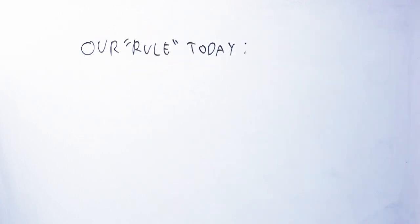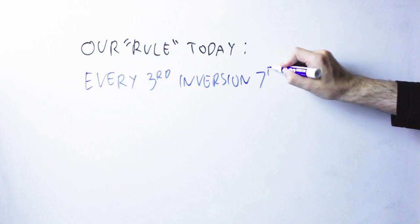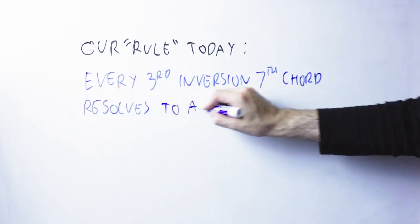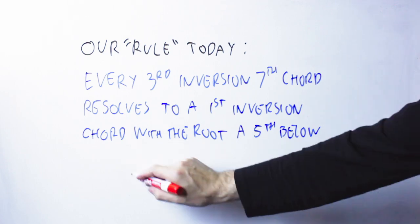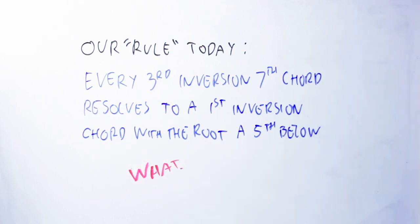The trick we're going to take is every third inversion seventh chord resolves to a first inversion chord with a root a fifth below. Ouch! Sounds complex, eh? Well, honestly, it's really not that complex.